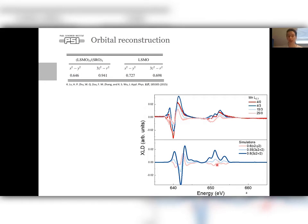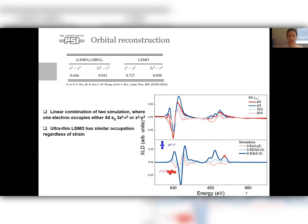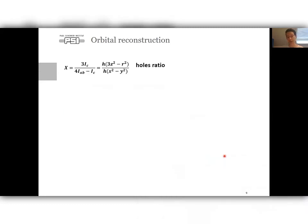While 15-3 has out-of-plane preferential occupation, 25-0 shows in-plane preferential occupation. So it agrees with DFT calculation. And for the ultrafine LSMO 4 unit cells we have a different picture here. For both of them it's dark blue curve here.